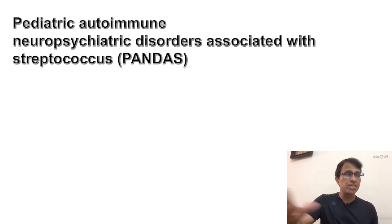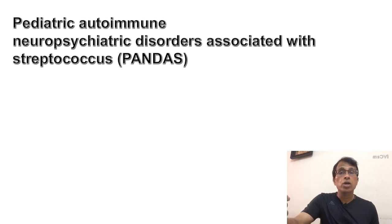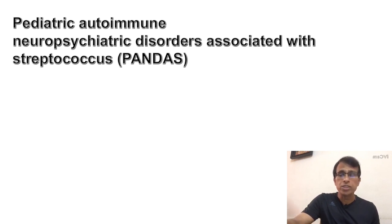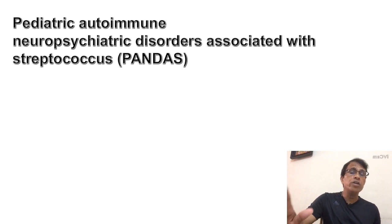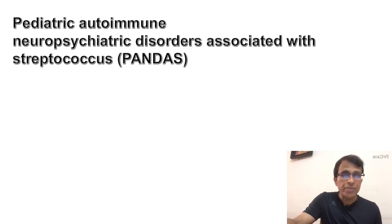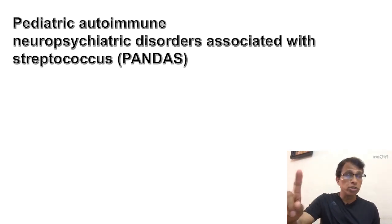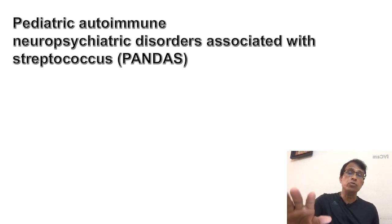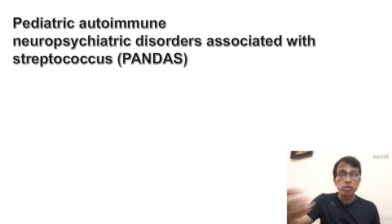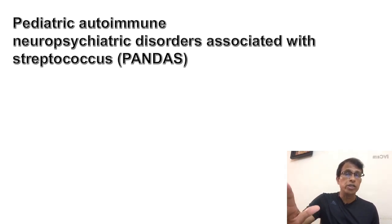Diphtheria can also cause a membrane in the throat — it is less common nowadays but still a potential pathogen. Other causes include infectious mononucleosis, candidiasis, and sometimes agranulocytosis. You need to know how to differentiate one membrane from another. In fact, the last NEET exam did ask a question on membrane in the throat and the answer was diphtheria, even though Streptococcus is more common. You also need to know tonsillectomy and newer technologies for it, such as coblation and radiofrequency tonsillectomy.